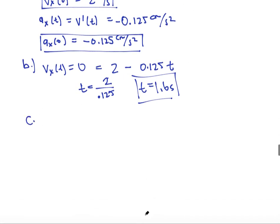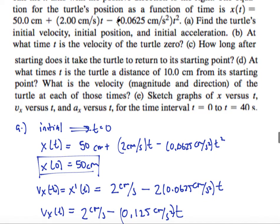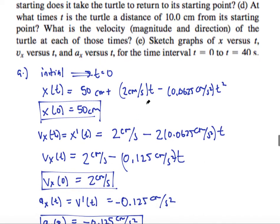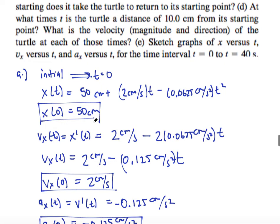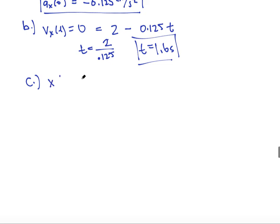Continuing on. Part c asks, how long after starting does it take the turtle to return to its starting point? So this is asking me, when do I return to 50 centimeters? So there are two ways to do this. One of those ways is to notice that in my position function, if I want to return to 50 centimeters, I could simply ask, when are these two terms together equal to zero? Or I could just say that when are these two terms, or when is the displacement equal to zero? So when is x of t equal to zero? So when did I go back to where I started?